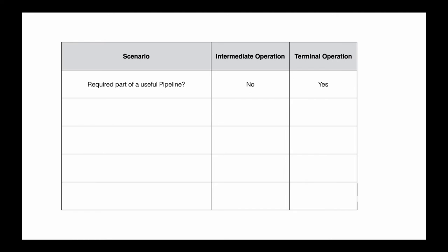The second scenario concerns how many times an operation can exist in a pipeline. An intermediate operation can exist multiple times — you can have multiple intermediate operations, and they don't even need to be unique; you can repeat the same operation multiple times in one pipeline. However, a terminal operation cannot exist multiple times. When the terminal operation is hit, the stream ends.